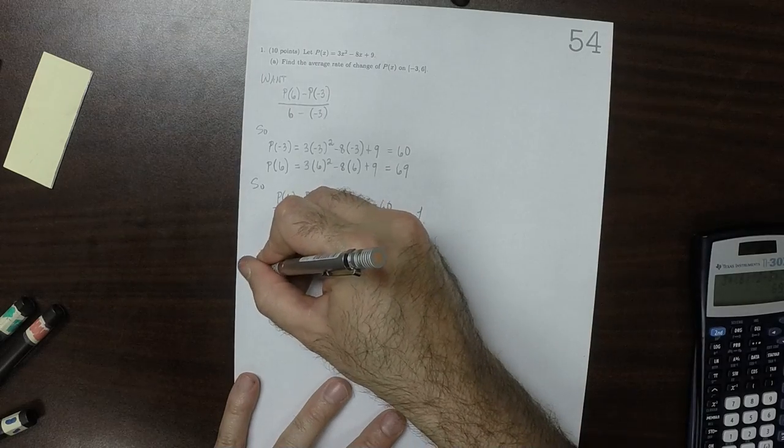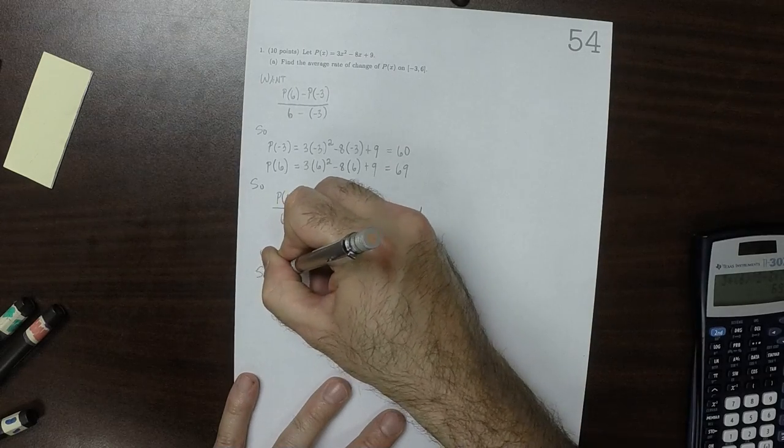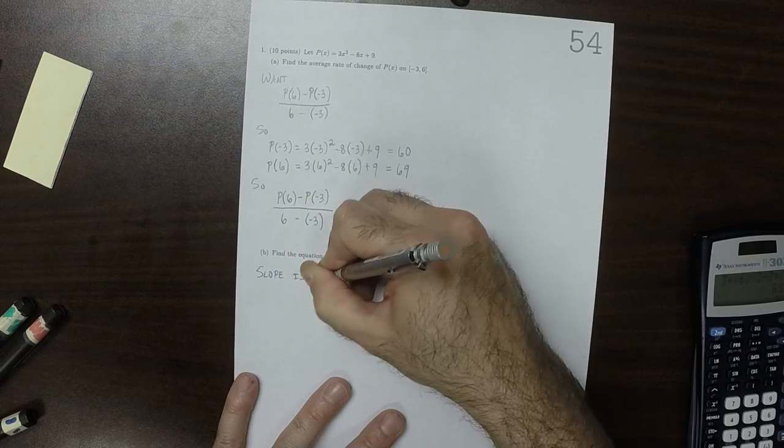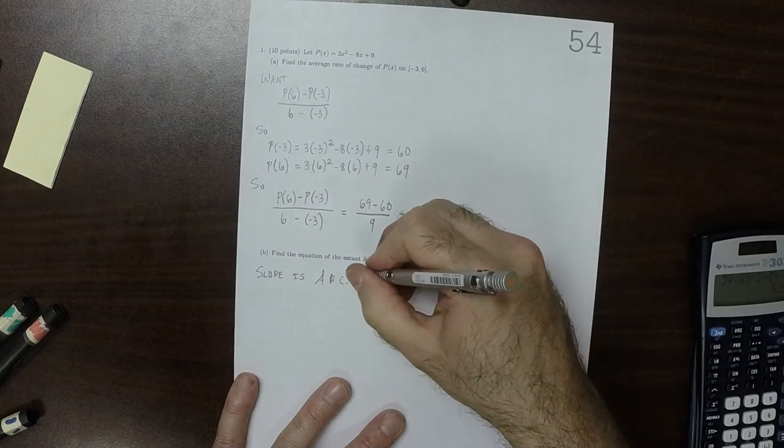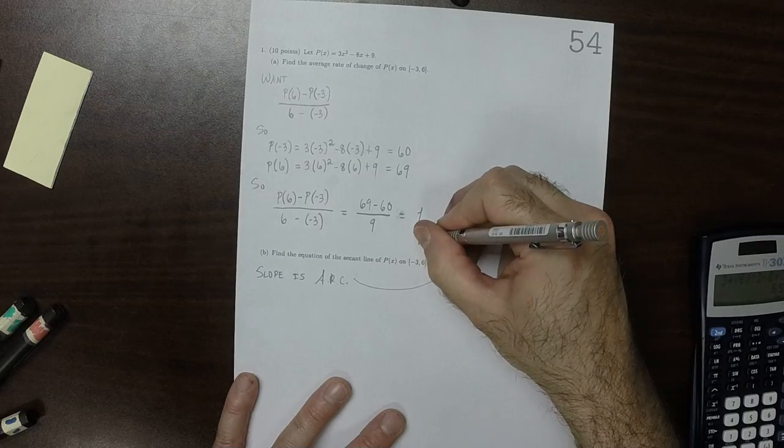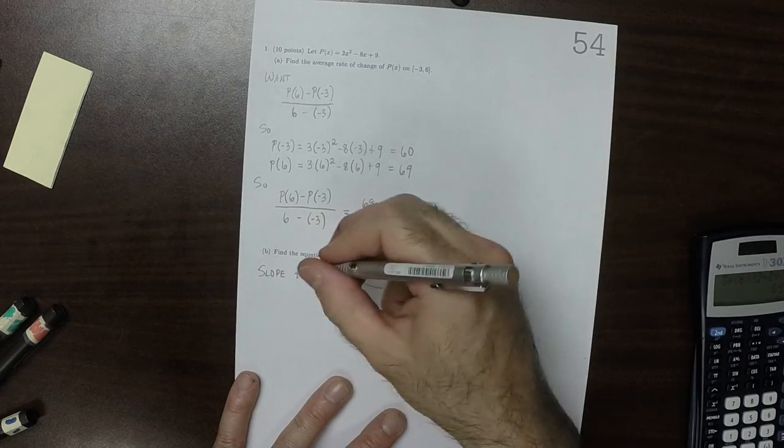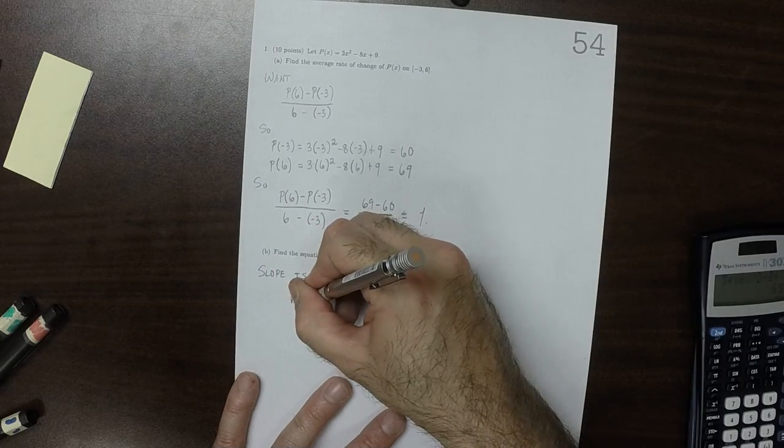So we know that the slope of the secant line is the average rate of change, which is convenient because that's what we did in the previous part. So therefore, the slope that we're looking for is 1.